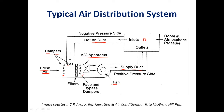Dampers are provided at different locations to regulate and redirect airflow as per the desired direction. Filters are also located inside the unit; their function is to remove contamination and purify the air so the room receives fresh, clean air. The combination of the AC apparatus, filter, and fan — shown by the dotted line — is called the Air Handling Unit (AHU).